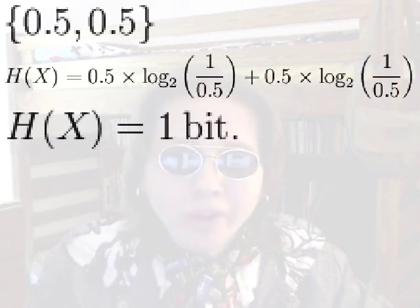And the result is 1. So a fair coin has 1 bit of entropy, meaning when we flip the coin, we're going to receive an average of 1 bit of information.